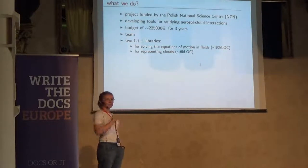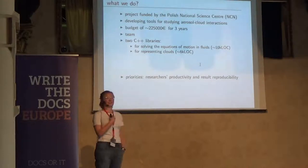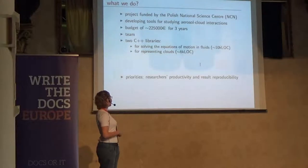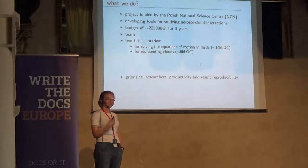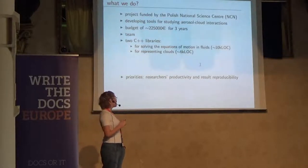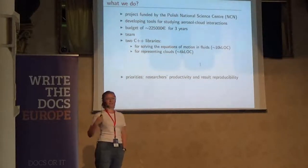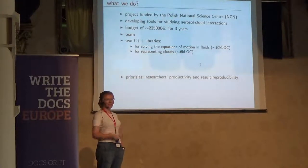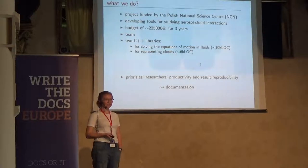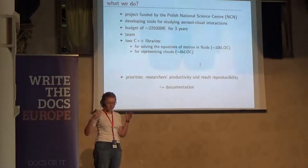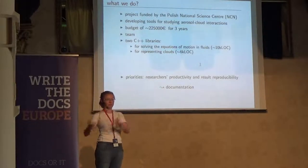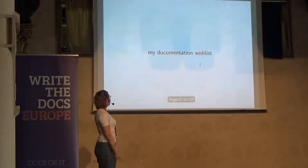When we applied for this funding, we actually promised to have two things at heart when writing this software. First is the productivity of the researchers — the scientists that are going to use our software. Second is the reproducibility of the results, so the reproducibility of the science obtained by our software. And that obviously leads to the documentation issue. I'd like to point out that getting money to do the software to do the science is pretty uncommon — usually you get the money to do the science without the middle point.